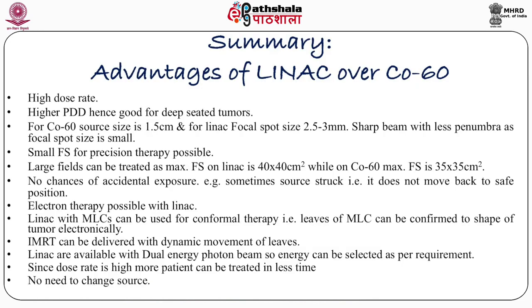In summary, the advantages of linac over cobalt-60 are as follows. Linac output is very high as compared to cobalt-60, so the dose rate is high. This has an advantage over cobalt-60 because the isocenter-to-source distance is more in linac, so the percentage depth dose is more. Percentage depth dose is directly related to SSD — in linac, more the SSD, more is the percentage depth dose — and when percentage depth dose is more, deep-seated tumors can be treated in a better way. For cobalt-60, source size is 1.5 to 2 centimeters; more the focal spot size, more is the penumbra. In linac, the focal spot size is small, so the penumbra is very small. A small focal spot makes precision therapy possible.